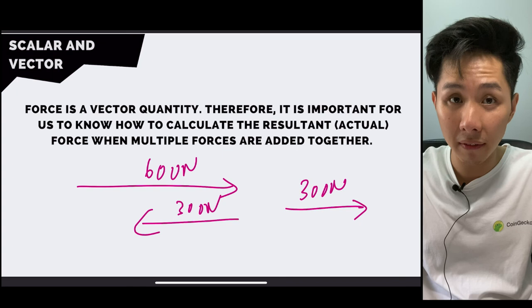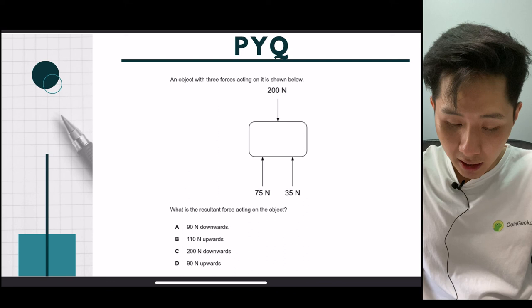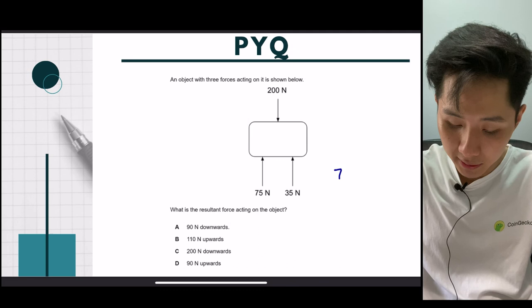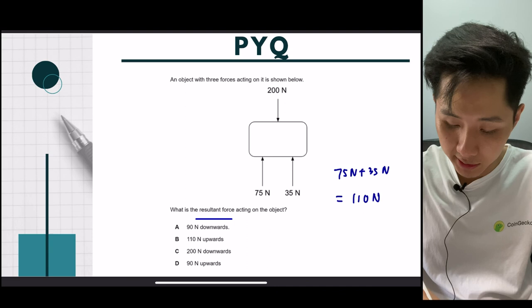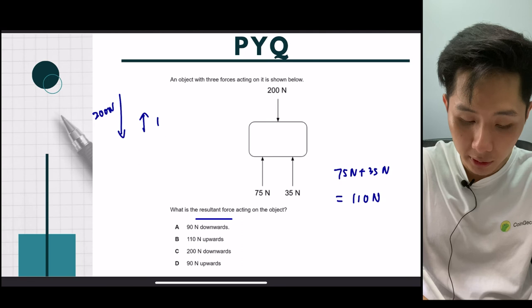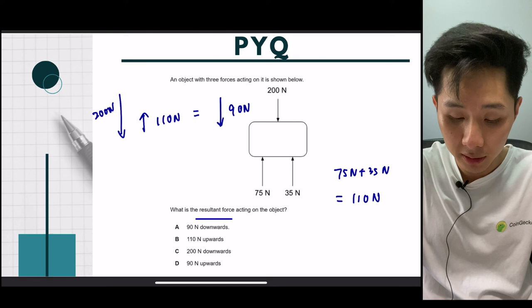Final question: an object has three forces acting on it — upward forces of 75 Newton and 35 Newton (total 110 Newton upward) and a downward force of 200 Newton. The resultant force is 200 − 110 = 90 Newton downwards. The answer is A.